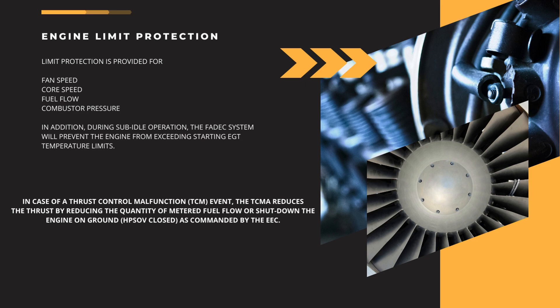The thrust control malfunction accommodation logic on the LEAP-1A engine identifies if the engine is not responding to throttle command and takes mitigating action if required. In case of a thrust control malfunction event, the TCMA reduces thrust by reducing the quantity of metered fuel flow, or shuts down the engine on the ground by closing the HPSOV as commanded by the EEC. A TCMA over-thrust event may be caused by the throttle lever assembly, the throttle lever position resolvers, a spurious EEC command to the fuel metering valve, or a physical failure of the FMV. A loss of TCMA shutoff capability is detected when the relay controlled by the spoiler and elevator computer is failed open.